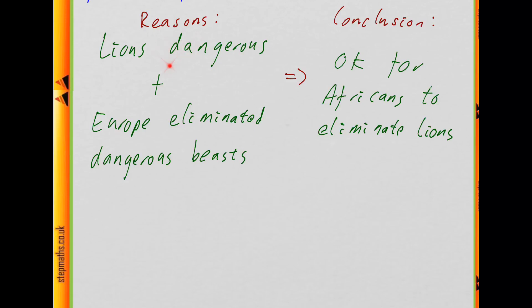Okay, so the reasons that are given basically amount to saying that lions are dangerous animals. For instance, they eat livestock. And that in Europe, the dangerous animals have been eliminated. And the conclusion is that it's okay for Africans to eliminate lions or not protect lions, because Europeans did. And now, bear in mind, we're looking for a flaw in this argument.